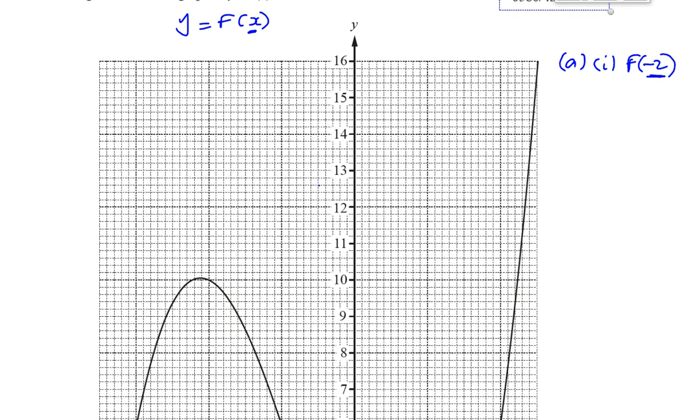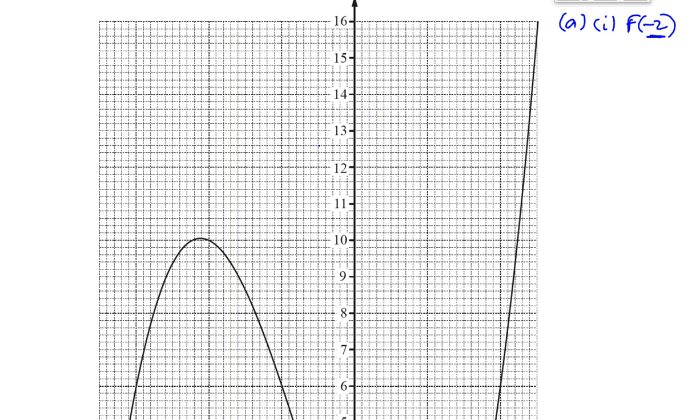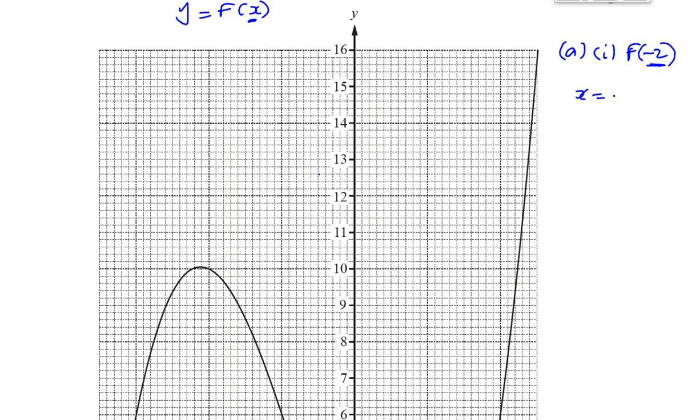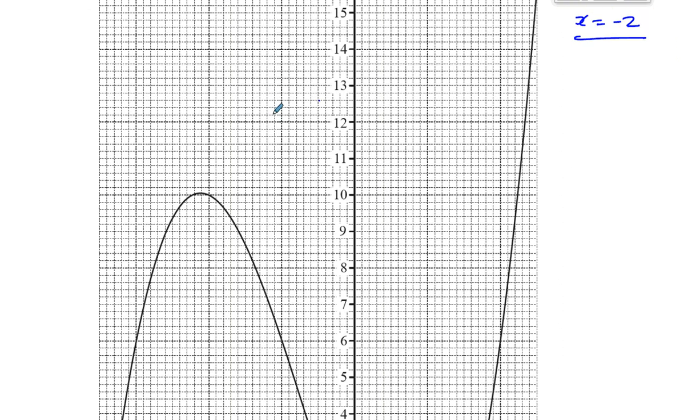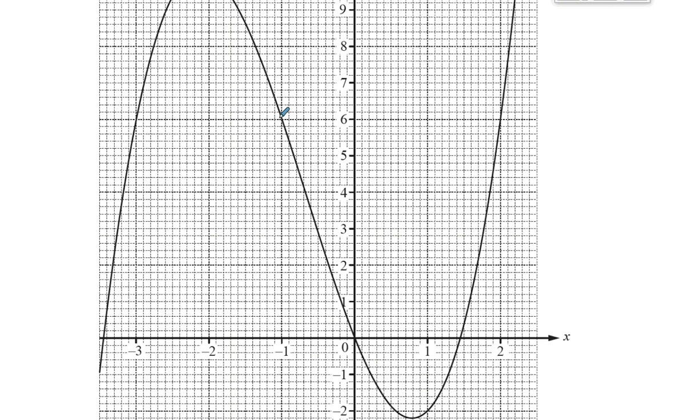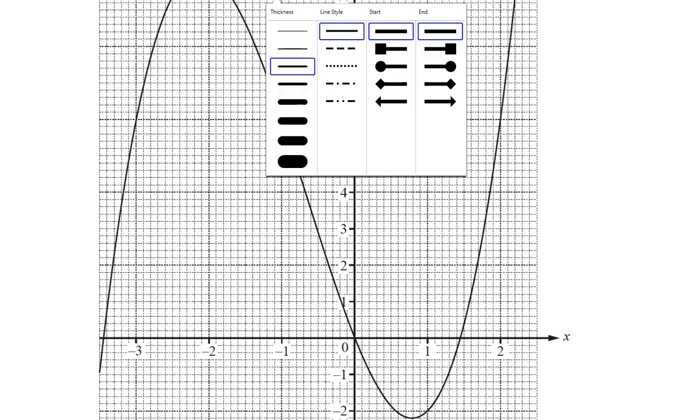So, to find the value of f(-2) graphically, we've got to draw the line x equals minus 2, seeing as minus 2 has replaced the x in our function. What's drawn is y equals f(x). So, minus 2 has replaced x, we draw the line x equals minus 2. To draw the line x equals minus 2, you need to draw a vertical line passing through -2 on the x-axis. So, I'm going to draw it.